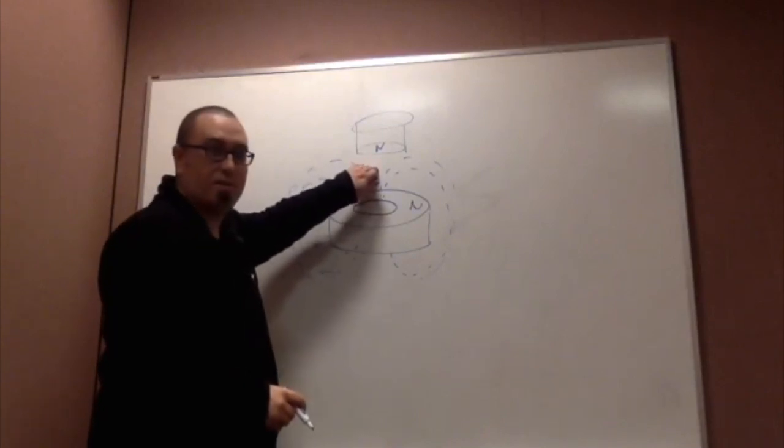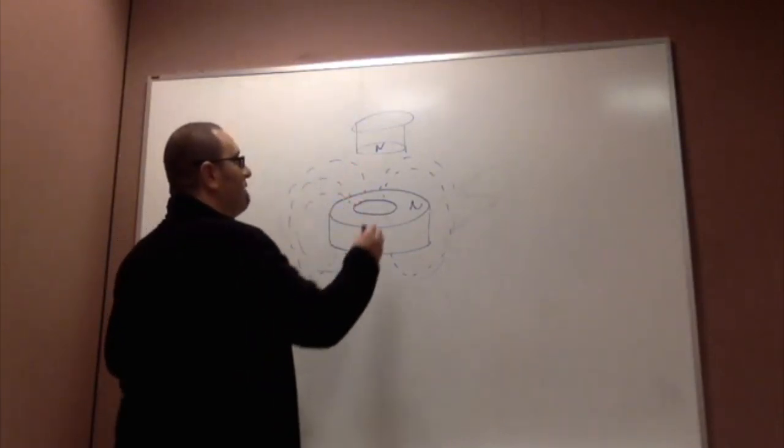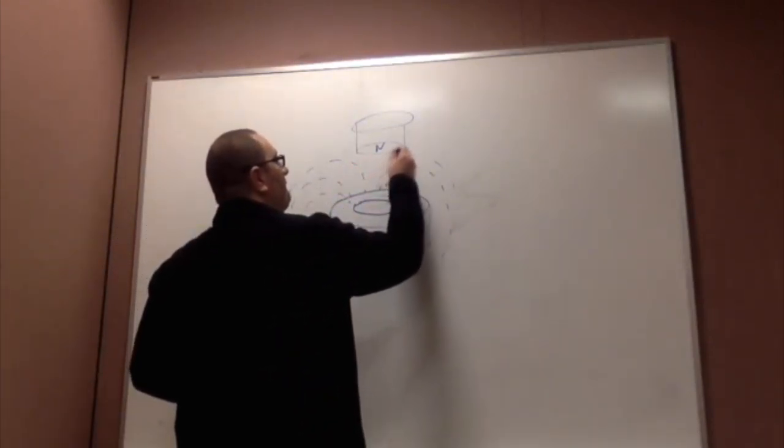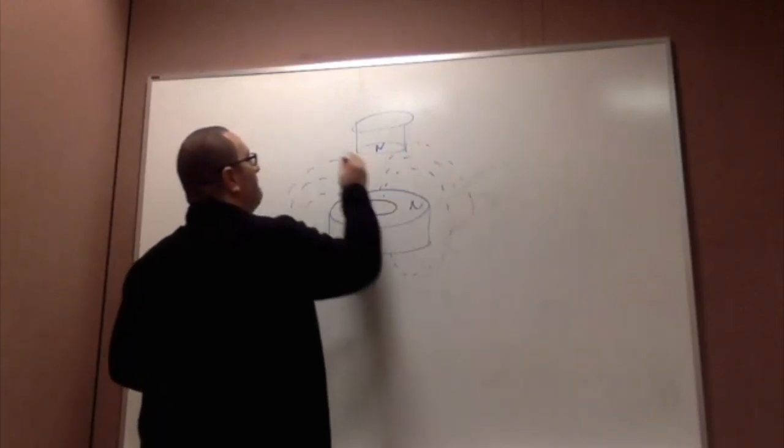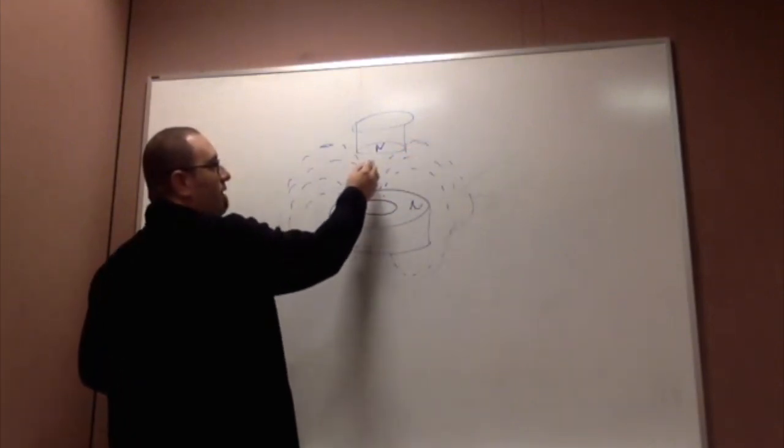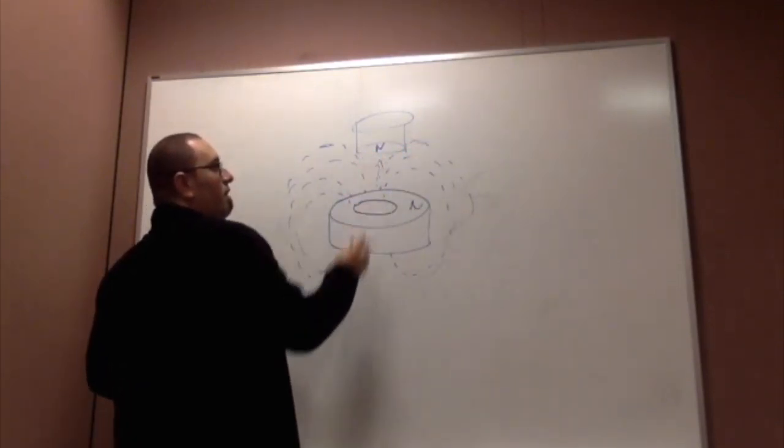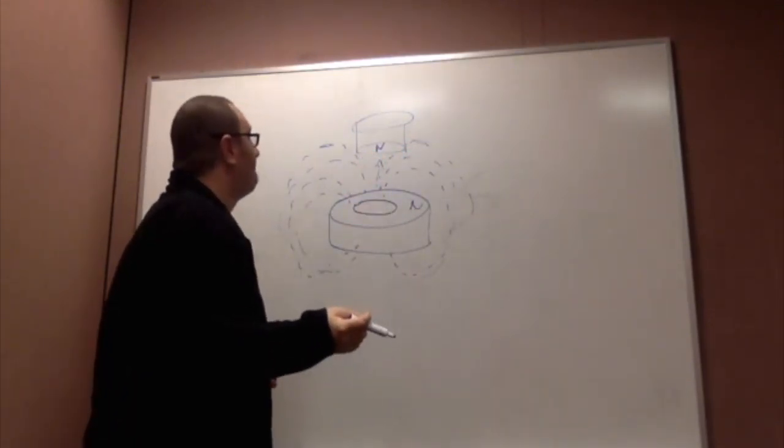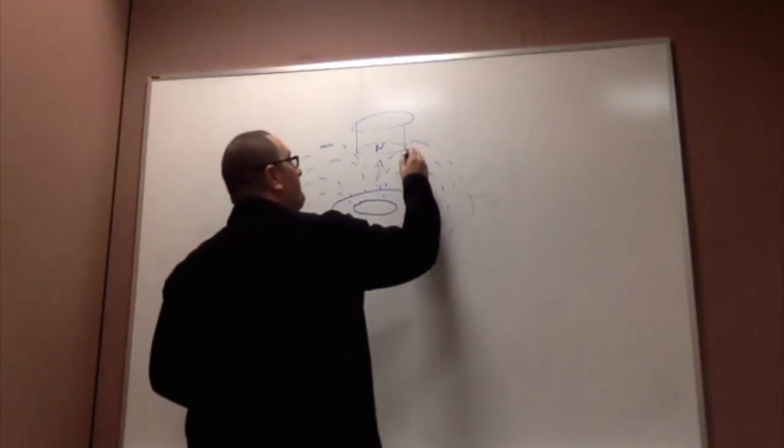So in this case, what you have is, you have a stronger field. You have a stronger field here and here than you do here. You do have some repulsion here, but not as much. The main repulsion is here and here.